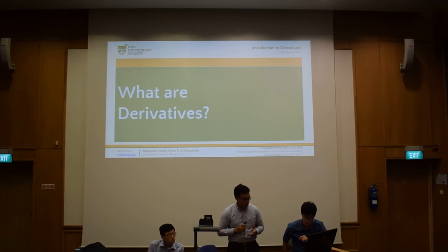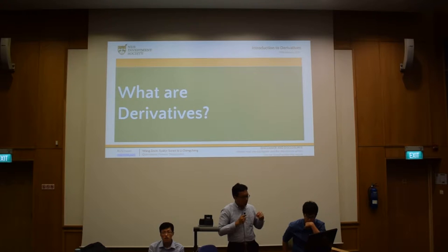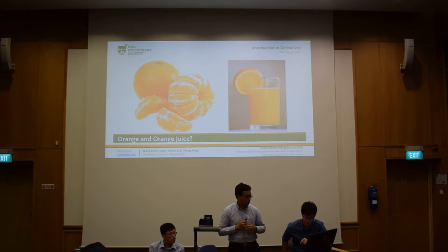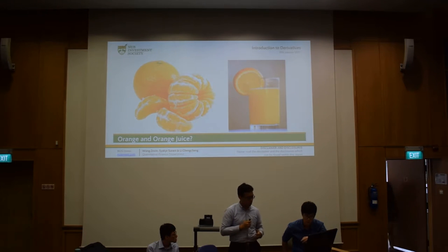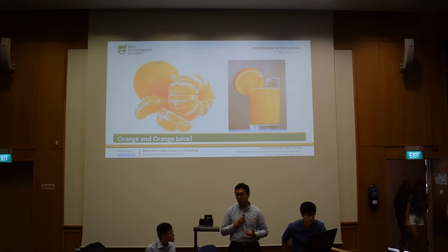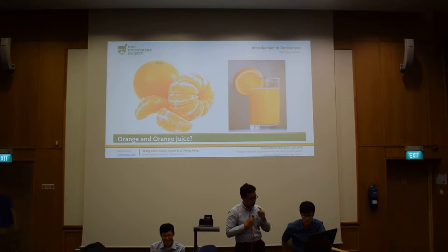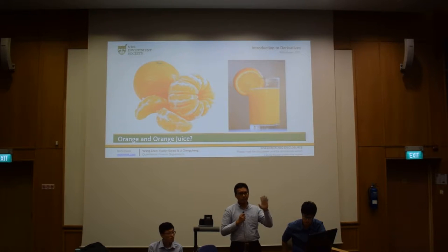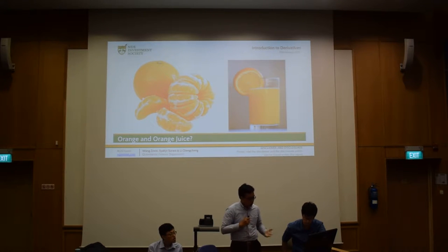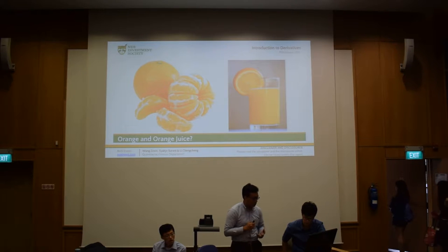So, what are derivatives? Let's start with the basic concept. We have two pictures here — an orange and orange juice. What's the relationship between the orange and the orange juice? Orange juice is a derivative of oranges, because it derives from the orange that has been squeezed to become orange juice. Another example: fan fiction can be said to be a derivative of the official source material, since it is based on and derives from the settings of that material.